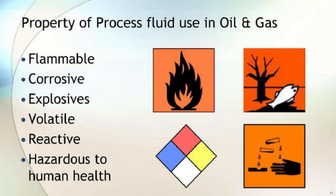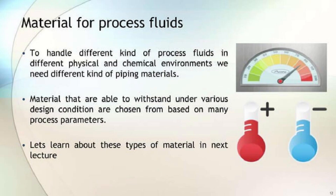Properties of process fluid used in oil and gas: Number 1 — Flammable. Number 2 — Corrosive. Number 3 — Explosive. Number 4 — Volatile. Number 5 — Reactive. Number 6 — Hazardous to human health. To handle different kinds of process fluids in different physical and chemical environments, we need different kinds of piping materials. Materials that are able to withstand various design conditions are chosen based on many process parameters.